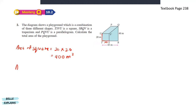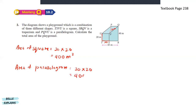Next for the parallelogram: the total height is 40 and this part is 20, which means the height of the parallelogram is also 20 meters. The area of the parallelogram is base times height — 20 times 20 — so 400 meter square.